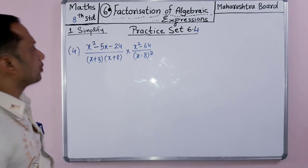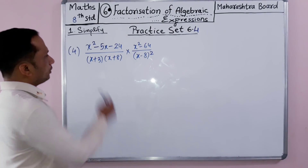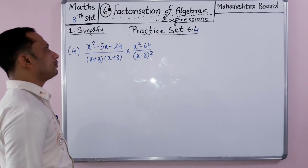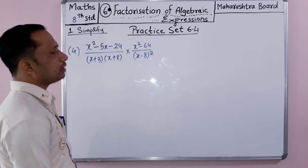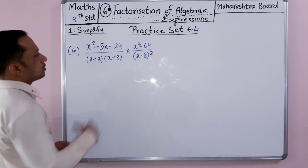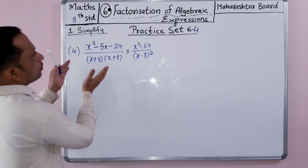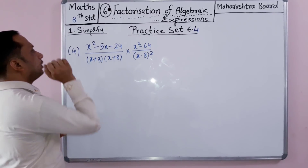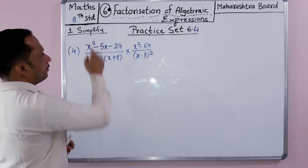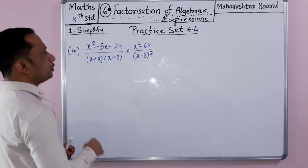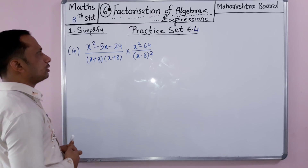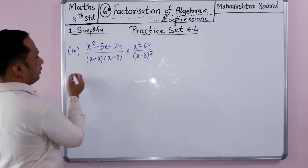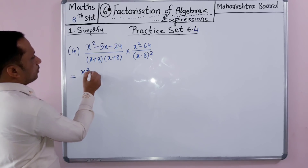This is the fourth problem: x squared minus 5x minus 24, divided by x plus 3, times x plus 8, into x squared minus 64 divided by x minus 8 bracket squared. First we'll separate this into expanded form and find the factors for the first expression. The factors of the middle term 5x are minus 8 and plus 3.